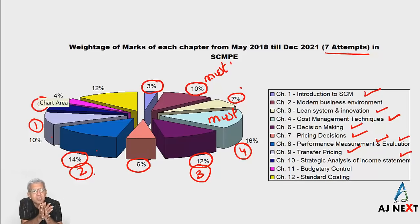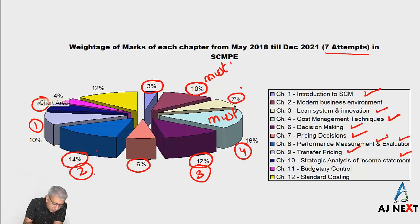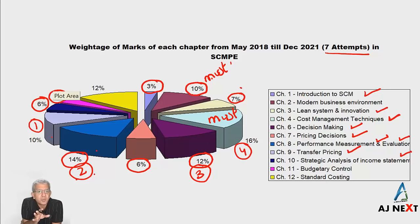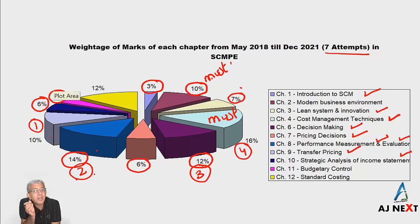Then there is one chapter not very important — approximately asked for 6% — and that is Strategic Analysis of the Income Statement, covering customer analysis and related things. It finds some weightage in one or two attempts. Then Budgetary Control, which is mainly asked for theory — till now no practical questions have been asked on it in the new course, although there are some in the module and case studies.